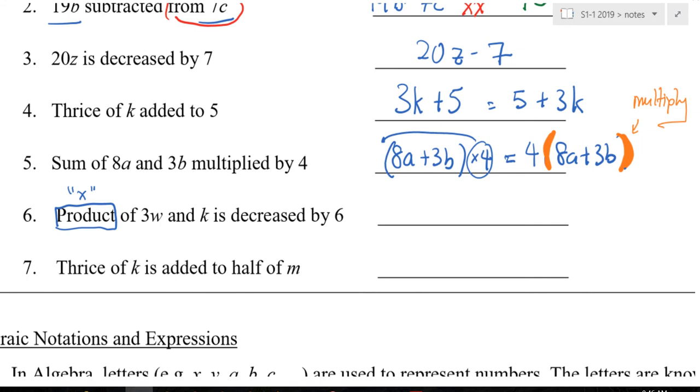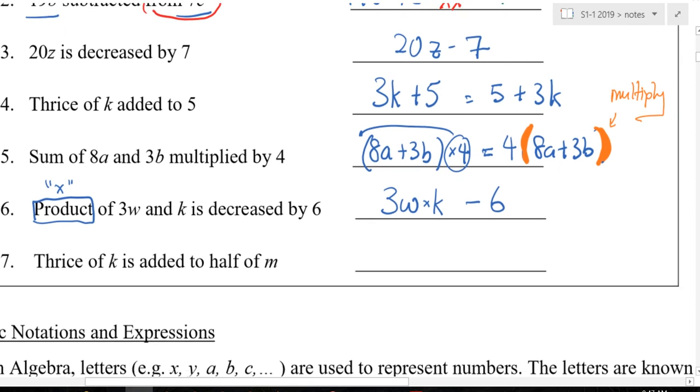Last one. Yeah, the time we learn minus time minus is equal to plus. It's also the bracket. Hi, Chi. What is product of this? This is decreased by 6. 3w times k minus 6. Now, can you write down? This is actually equal to 3w times k minus 6.